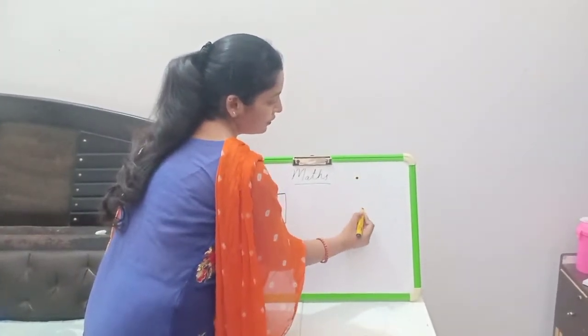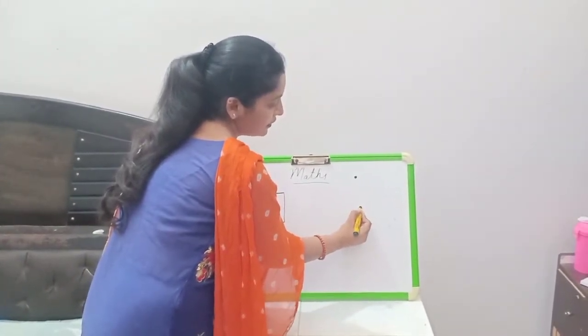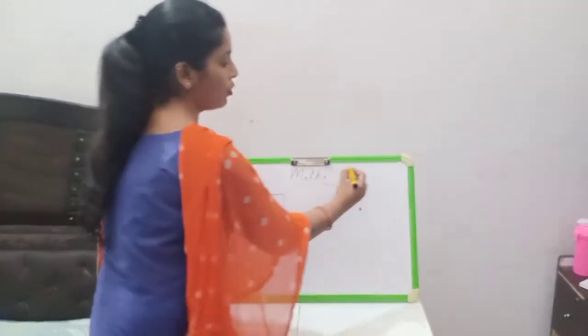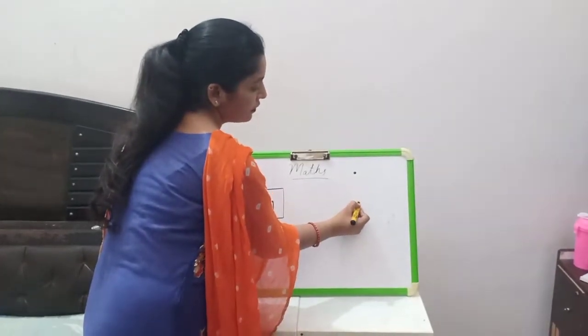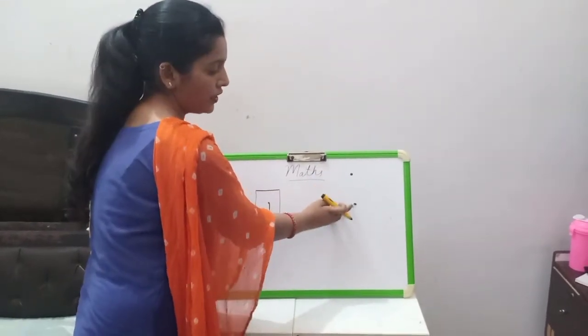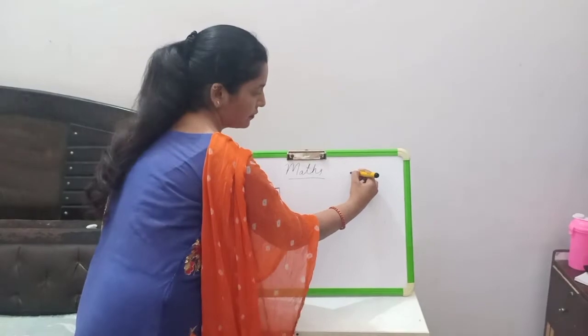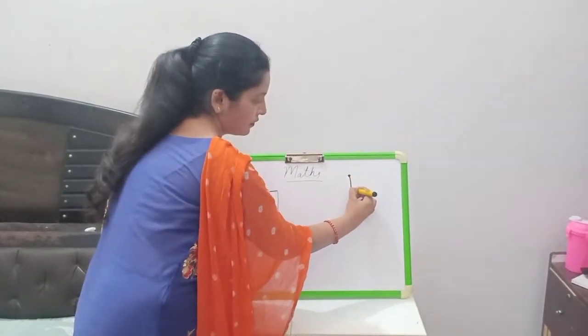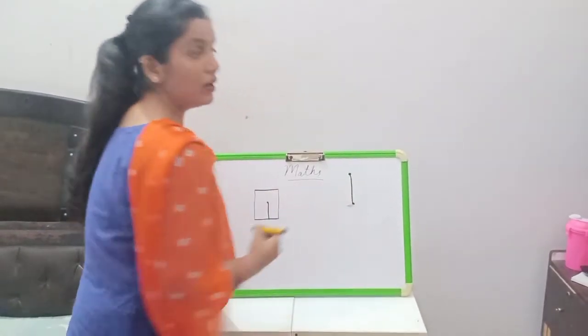One dot and second dot. Aur isko haang. Is dot se, is dot pe mila na hai. Number one. One.